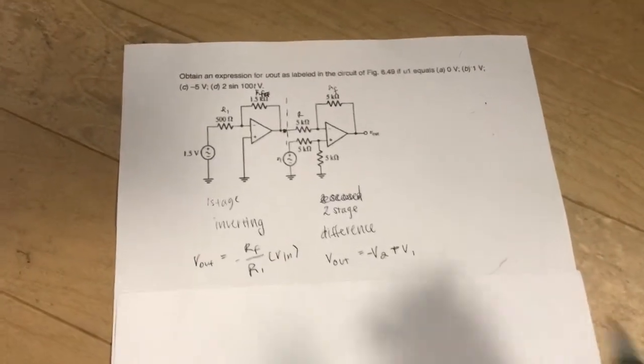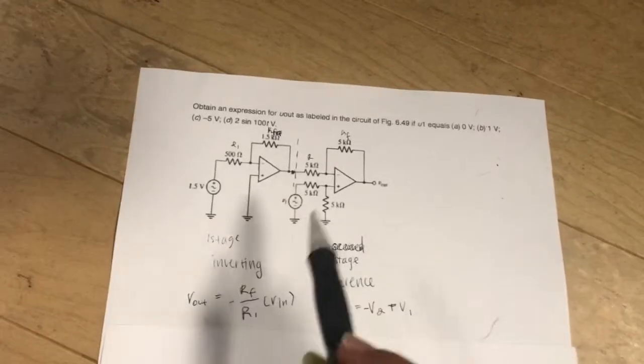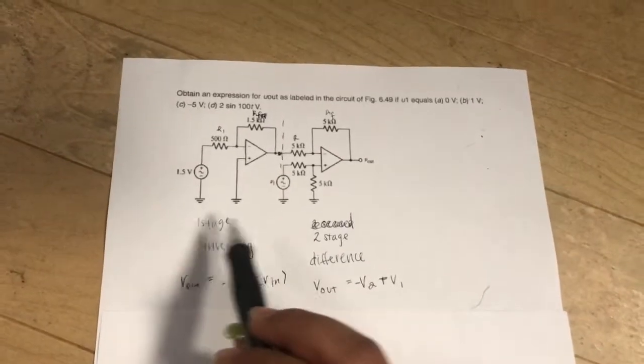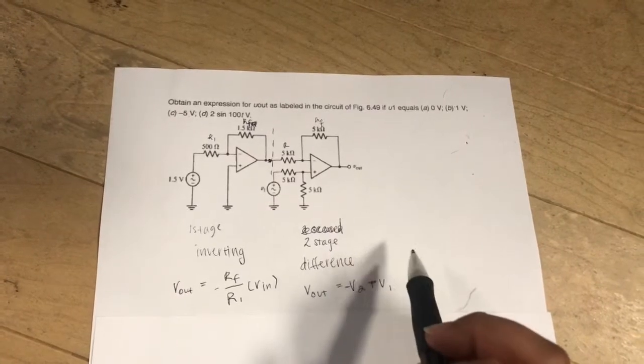A cascaded op amp is several op amps in stages. Here we have two stages. We have the first stage, which is an inverting op amp, and the second stage, which is a differential op amp.